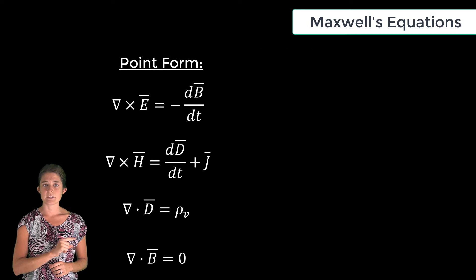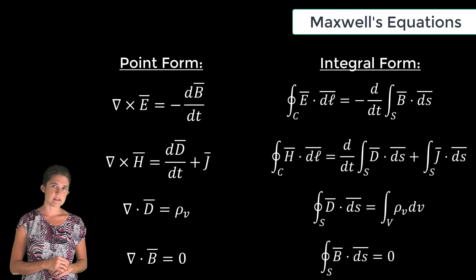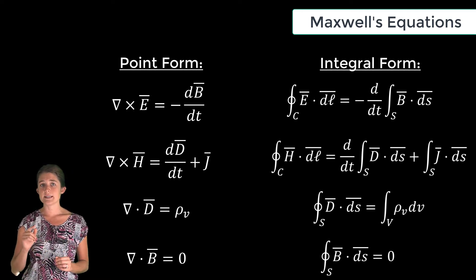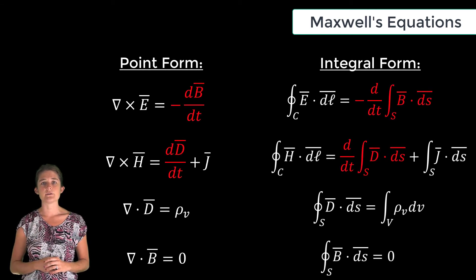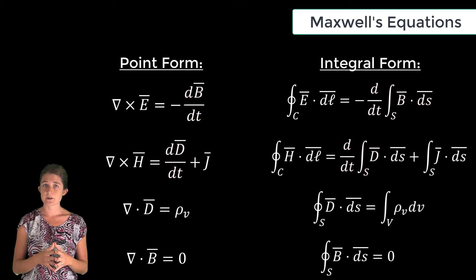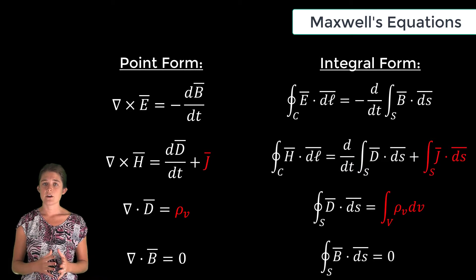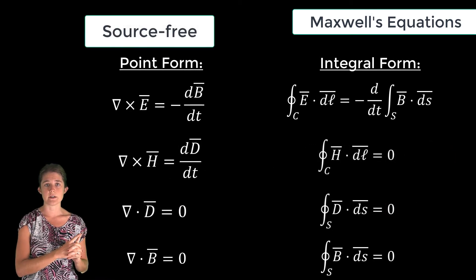These are the general case statements of Maxwell's equations in point form, and these are the general case statements in integral form. Note that if the fields are static, the d/dt terms go to zero and the equations reduce to their static forms. Also note that in a source-free region, both rho_v (the charge density) and J (the current density) go to zero, and the equations reduce to their source-free forms.